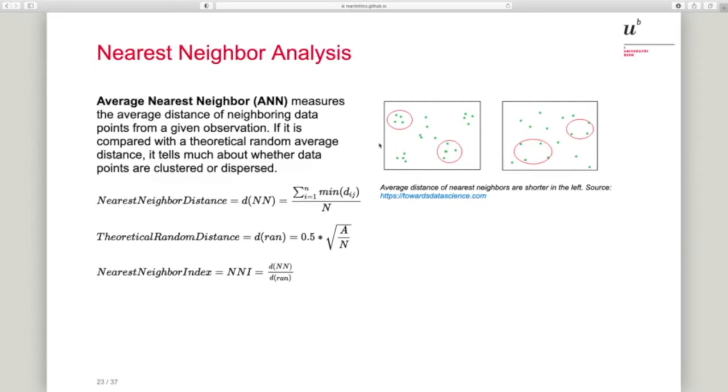One technique to analyze these kinds of patterns is nearest neighbor analysis, and specifically the technique of the average nearest neighbor. That's the most basic idea. This can be visualized with these pictures here. If we would have a clustered situation, if we look from each individual point to find its nearest neighbor, most of the time these distances will be rather small. Because the nearest neighbor will always be within the cluster, the average nearest neighbor distance will be small.